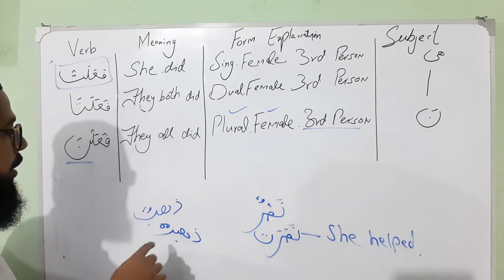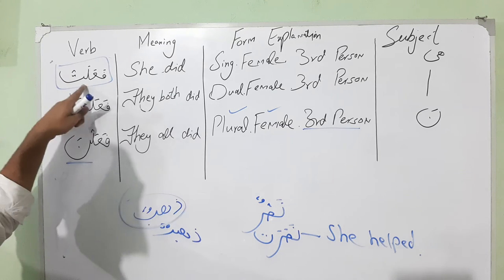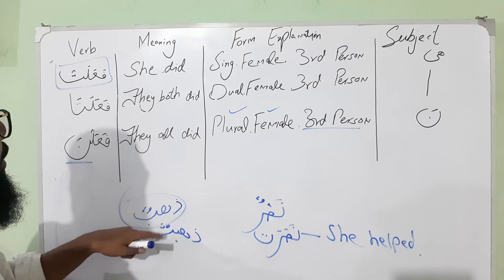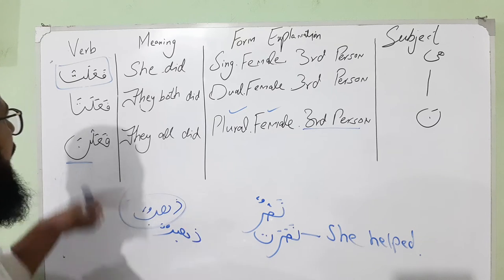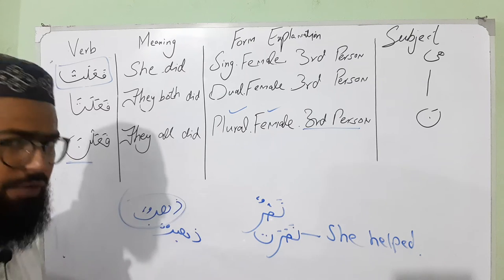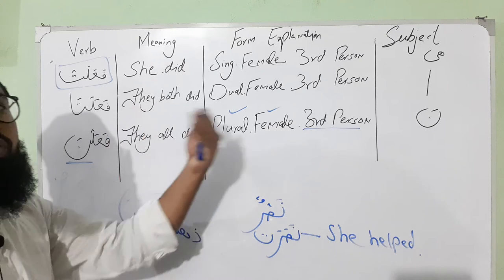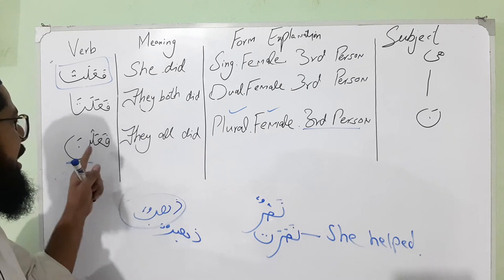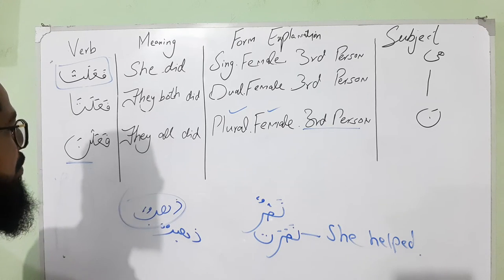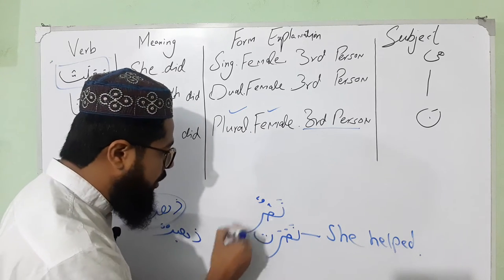The same would apply to other root words. From the root 'dhahaba,' if you say 'dhahabat' on the form of faalat, it means 'she went.' If you say 'dhahabata' like faalata, it means 'they both went.' And if you say 'dhahabna' like faalna, then the meaning would be 'they all went.'